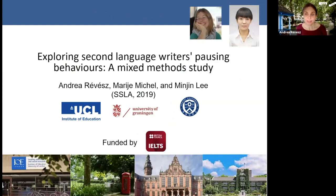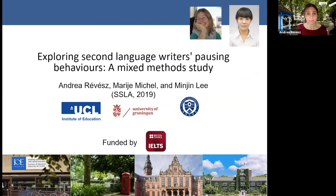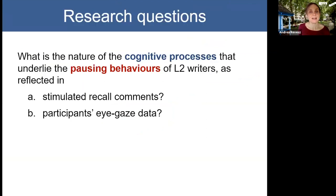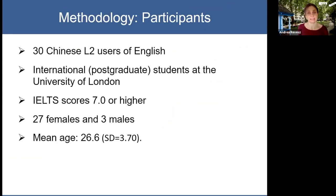The aim of the first study was to explore the processes that underlie the pausing behaviours of second language writers. This was a joint project with Marjolijn Michel from the University of Groningen, and Minjin Lee from Yonsei University in Korea — Minjin was my PhD student at the time. Our research question was: what is the nature of the cognitive processes that underlie the pausing behaviours of second language writers, as reflected in stimulated recall comments and participants' eye gaze data?